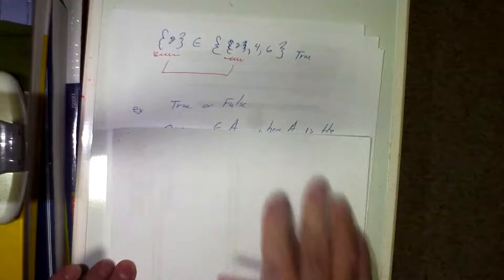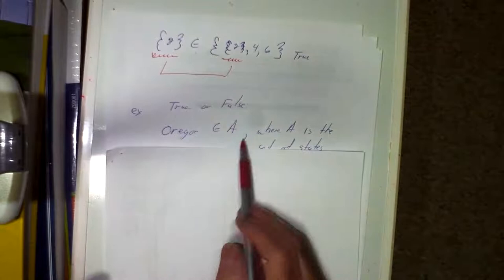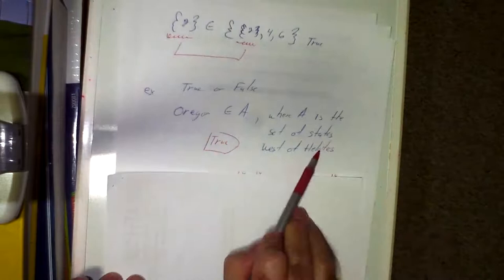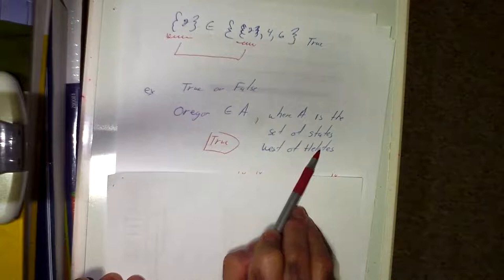True or false: Oregon is an element of set A, where A is the set of states west of San Antonio. Is that true? Well, if you're in San Antonio and you point west, is Oregon to the west? Yes — Oregon is an element of all the states west of San Antonio.